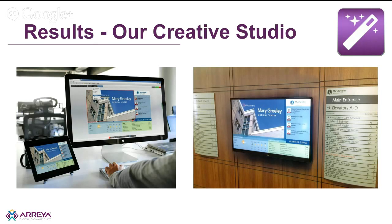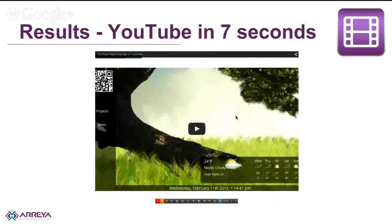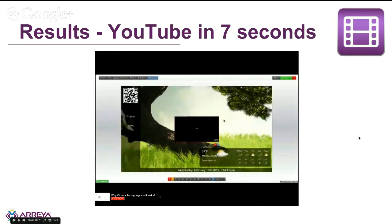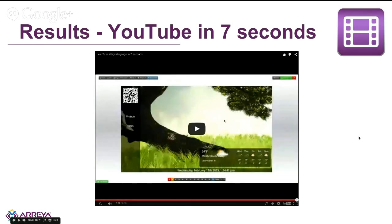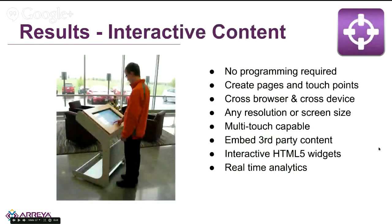With these technologies combined in our software, we provide a creative studio where people can create content and push it in real time to remote displays. On the left you can see someone editing content in a what-you-see-is-what-you-get browser-based editor, and on the right the result on an actual client display. To show just how fast and easy it is to integrate third-party content, we timed ourselves: it takes about seven seconds to copy and paste a YouTube URL into our editor and display that video on your signage.